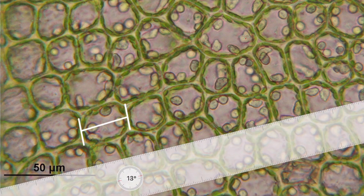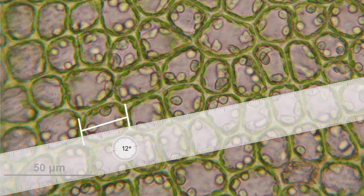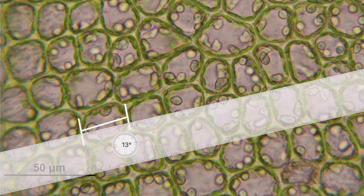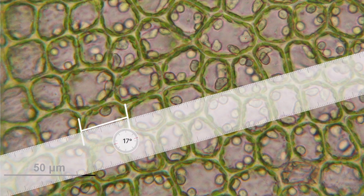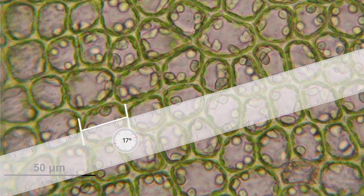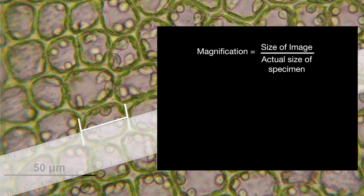Now we can use that magnification of 1020 to calculate the actual length or width of a specimen — for example, this cell. To do that, we measure the size of the image by placing a ruler along the white line between the two white markers. The image size measures 26 millimeters.